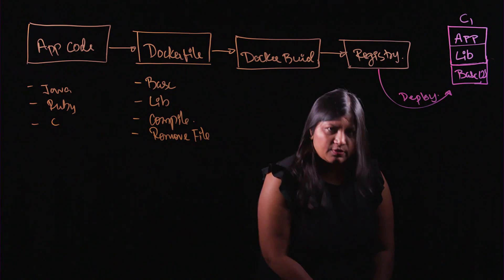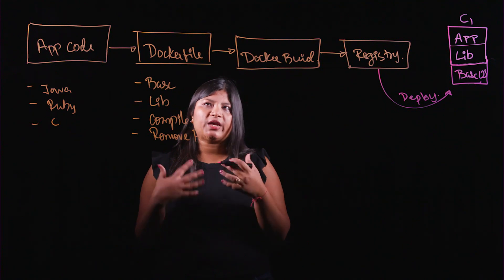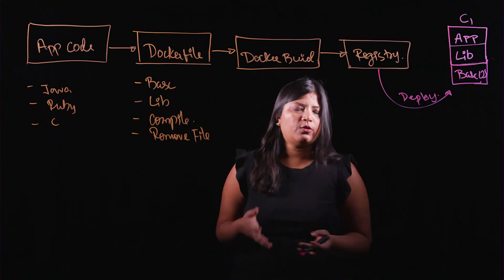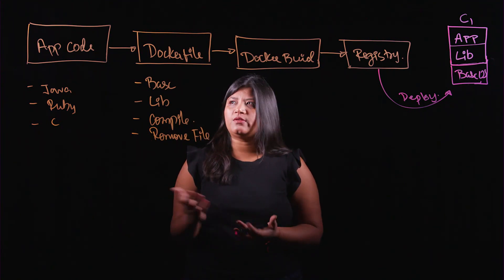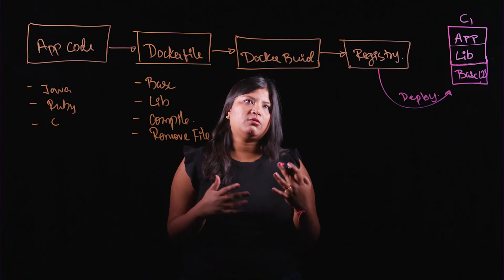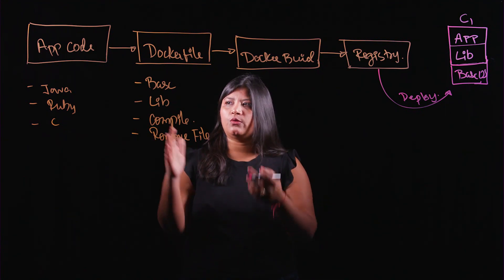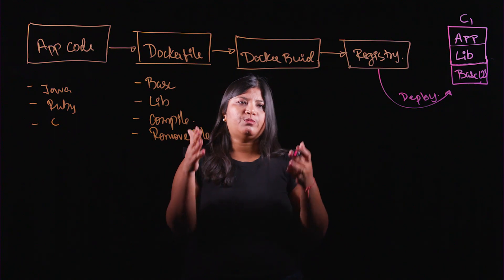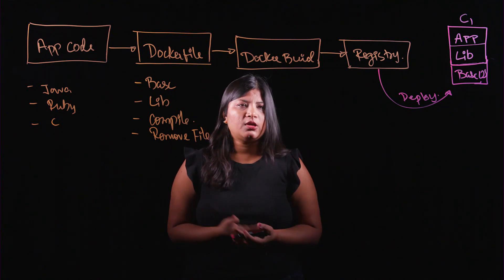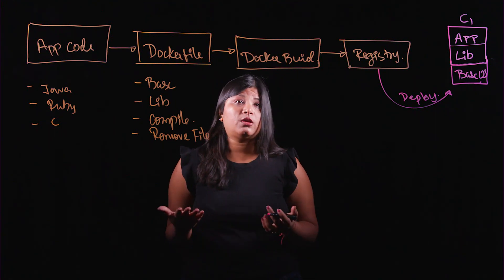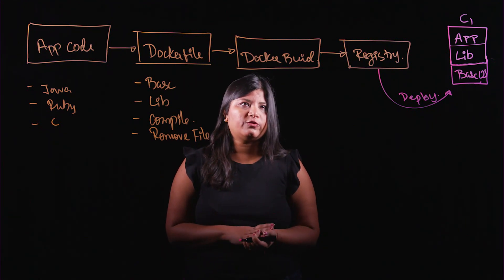Just think about the entire process of writing application code, packaging it up into a container, and then finally deploying it. This process may seem simple for maybe one, two, or three containers. But if you're building tens or hundreds of containers, there's a significant overhead in manually writing a Dockerfile, building it, and then deploying it. There's also a testing cycle involved because you want to test whether that Dockerfile works. So this can be a huge overhead, and that is what we are going to solve for today.